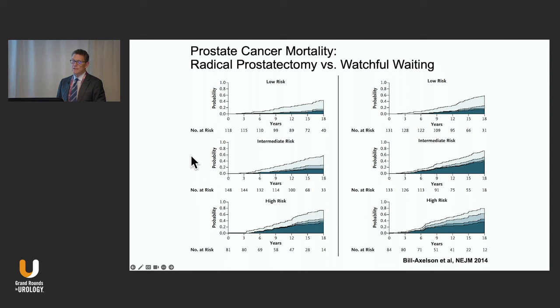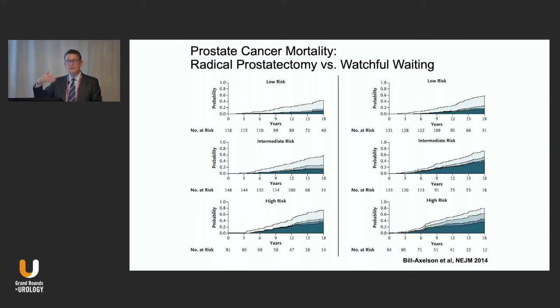Ten-year observation from the PROTECT trial is not adequate to observe the difference that will emerge. That difference began to emerge at year 12, was more profound at 15, and by 20 years the curves had deviated quite significantly. So many, if not most, intermediate risk patients with more than 15 years of life expectancy should be treated. The hazard ratio was 0.38 for intermediate risk patients.